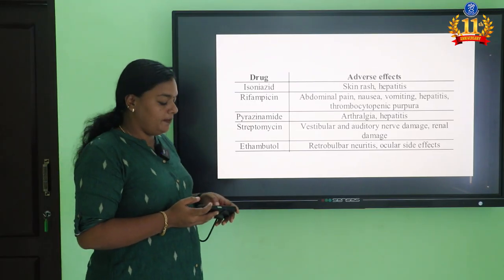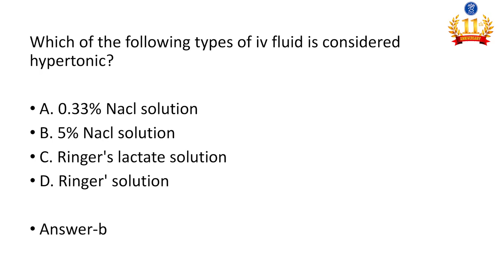Next question: which of the following types of IV fluid is considered hypertonic? We have three types: isotonic, hypotonic, and hypertonic solution. From the options — 0.33% NS, 5% NS, Ringer's lactate, and Ringer's solution — which is hypertonic? The answer is 5% NS.